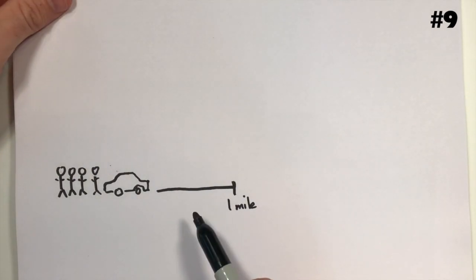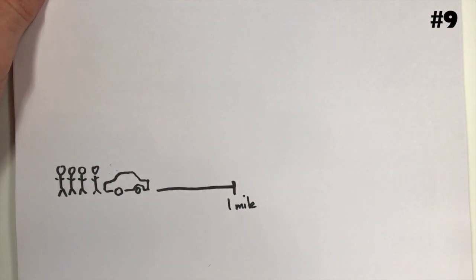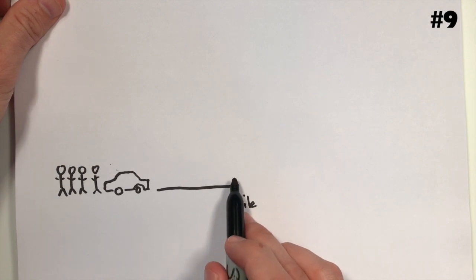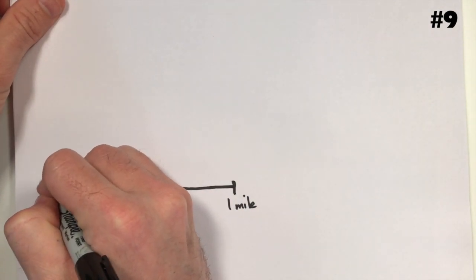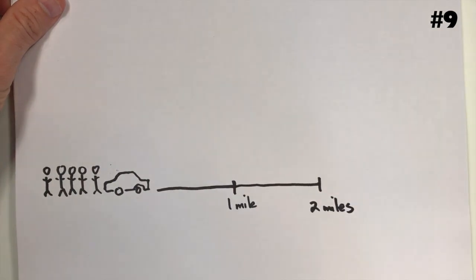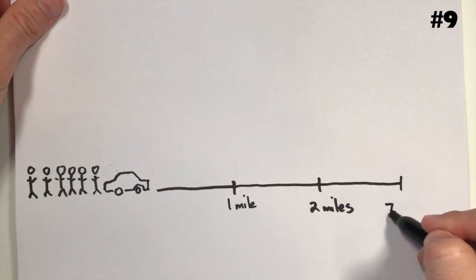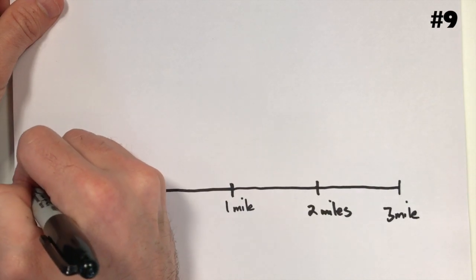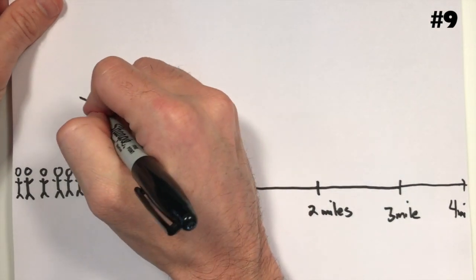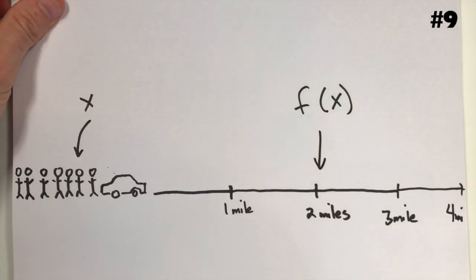There's a silly contest where people try to push a car and see how far they can push it before they run out of energy. When there are four people pushing the car, they run out of energy after one mile. Five people can make it to two miles. Six people can make it to three miles. And if seven people push, they can make it to four miles. X is the number of people and f of x is the distance they can push that car before they run out of energy.